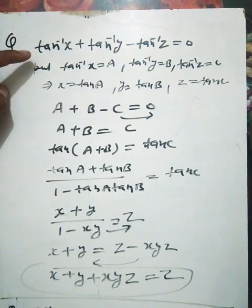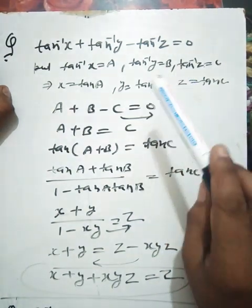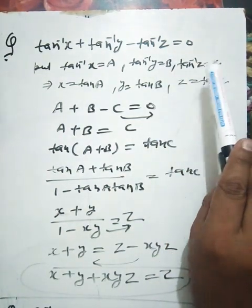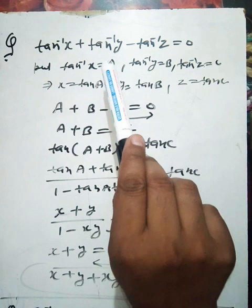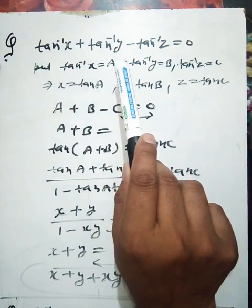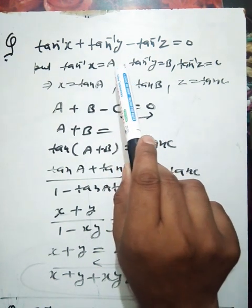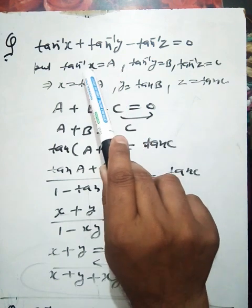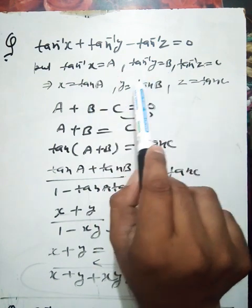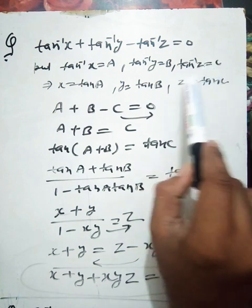Here we put tan inverse x equals a, tan inverse y equals b, tan inverse z equals c. So x equals tan a, y equals tan b, z equals tan c.